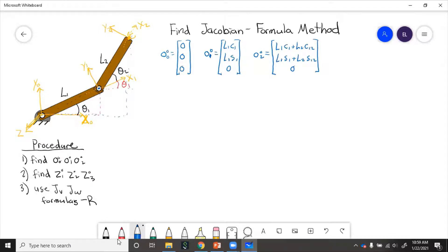The final origin is going to be L2 added to origin one. Next, we need to find the z-axis vectors. These are actually all the same. They all point out of the page.